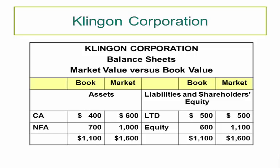To balance the right side of a balance sheet using market values, equity becomes the plug variable. With total market value assets at $1,600, and long-term debt fixed at $500 in both book and market columns, equity absorbs the extra value — jumping from $600 book value to $1,100 market value. The actual market value of shares is nearly double what appears on the books.